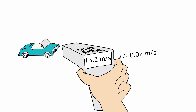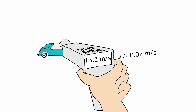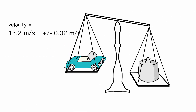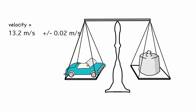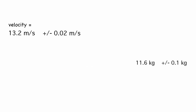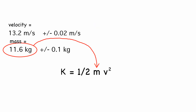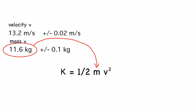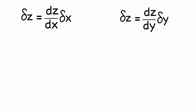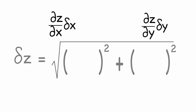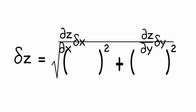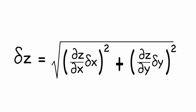Let's make it a little more complicated. Suppose you've measured two things in the lab, each of which has an uncertainty, and you want to compute something by combining the two — for instance, kinetic energy from both a measured velocity and a measured mass. Here's how to put them together. This is called adding the uncertainties in quadrature.